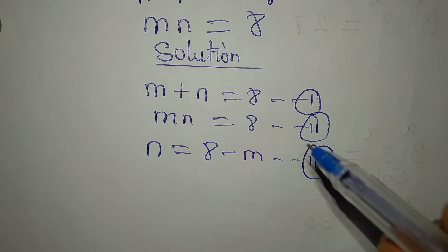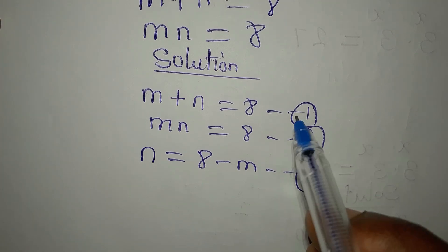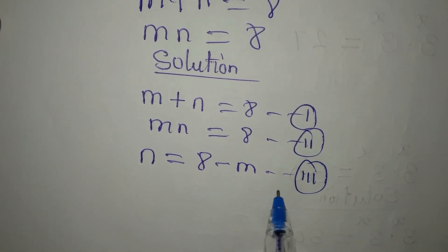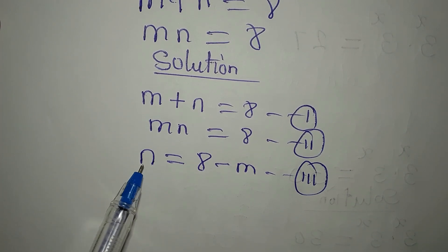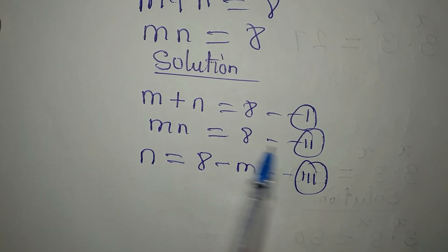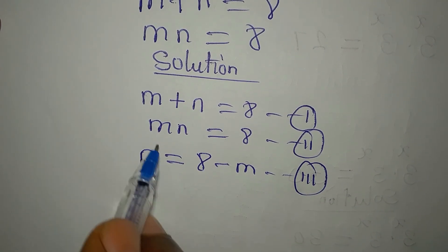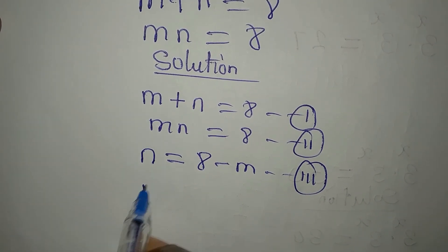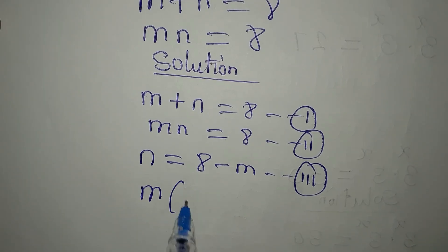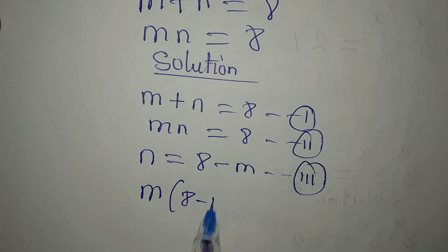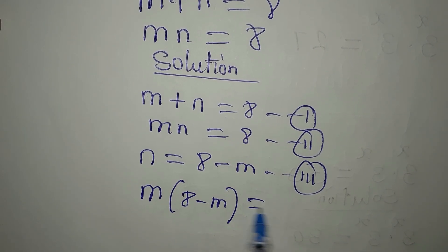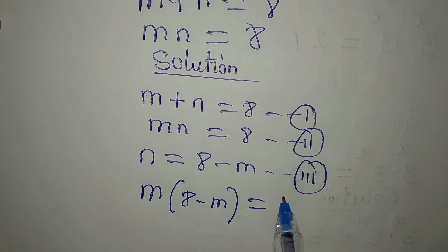Now it is equation 1 that gave birth to equation 3, which means you should put equation 3 back into equation 2. So we have m in place of n — we have 8 minus m — and this is equal to 8.